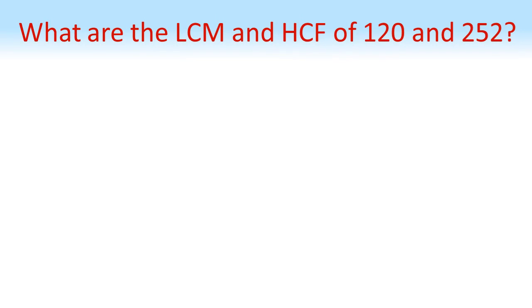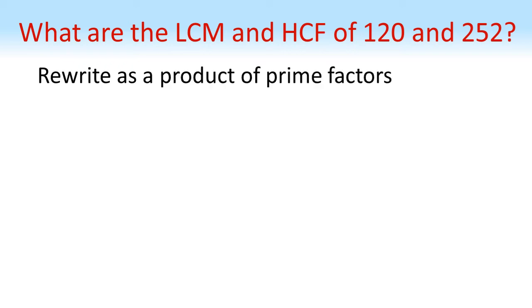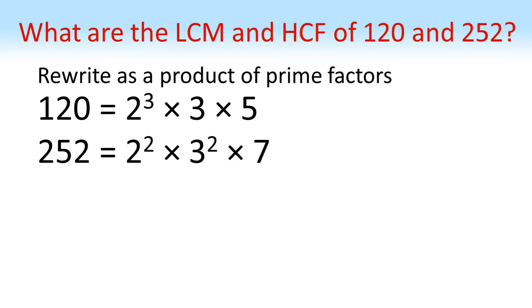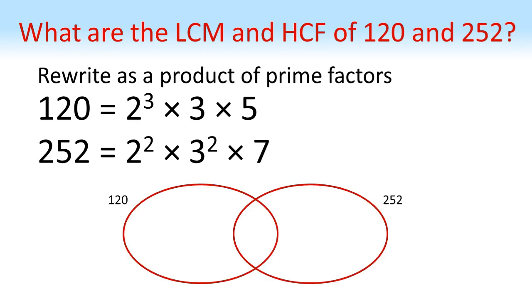Now let's find the lowest common multiple and highest common factor of 120 and 252. Writing out the multiples of these numbers would take a long time, so using prime factors is definitely quicker. 120 = 2³ × 3 × 5, and 252 = 2² × 3² × 7.